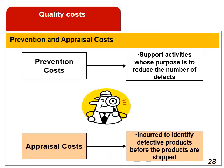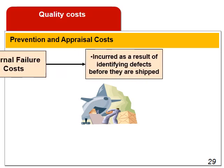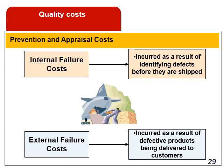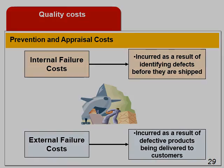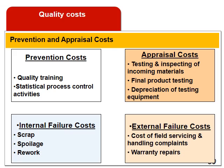There are four broad categories of quality costs: prevention costs, appraisal costs, internal failure costs, and external failure costs. Prevention costs are incurred to support activities whose purpose is to reduce the number of defects. Appraisal costs are incurred to identify defective products before the products are shipped to customers. Internal failure costs are incurred as a result of defective products. Here are some examples of each type of quality cost.